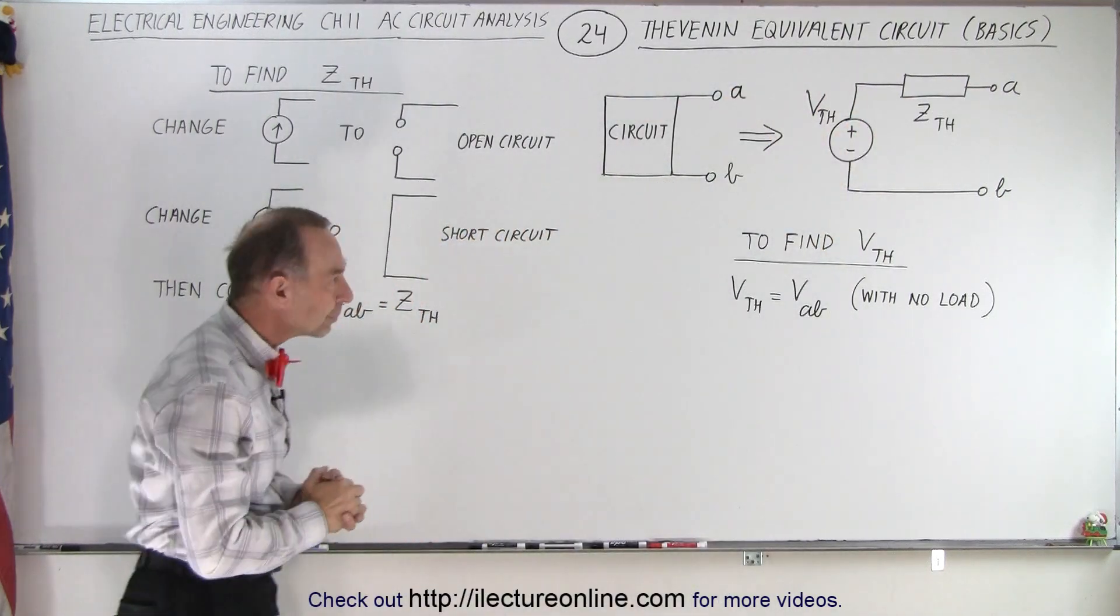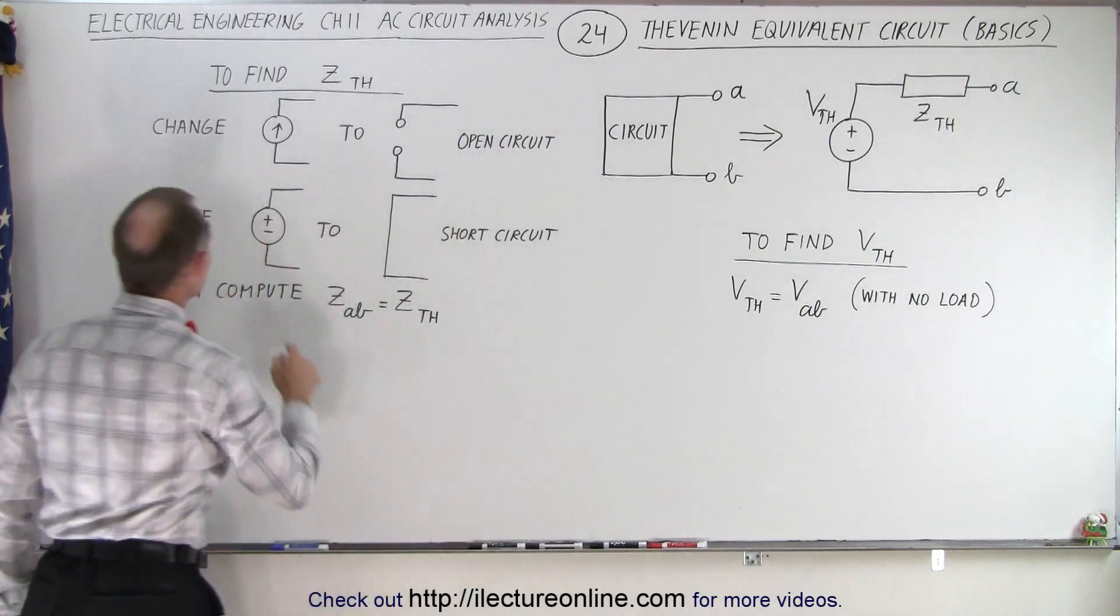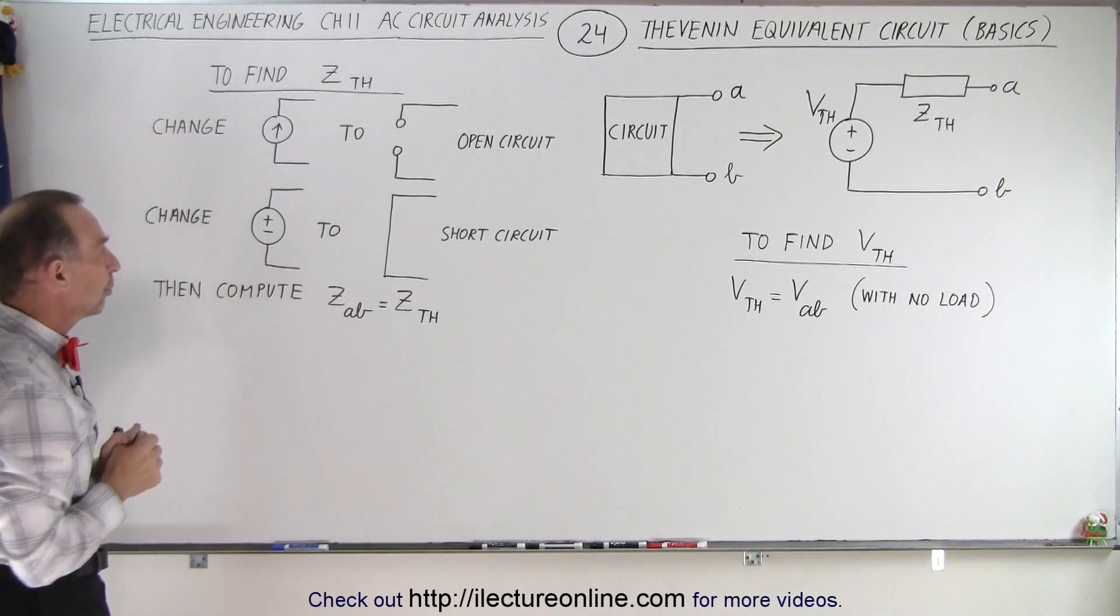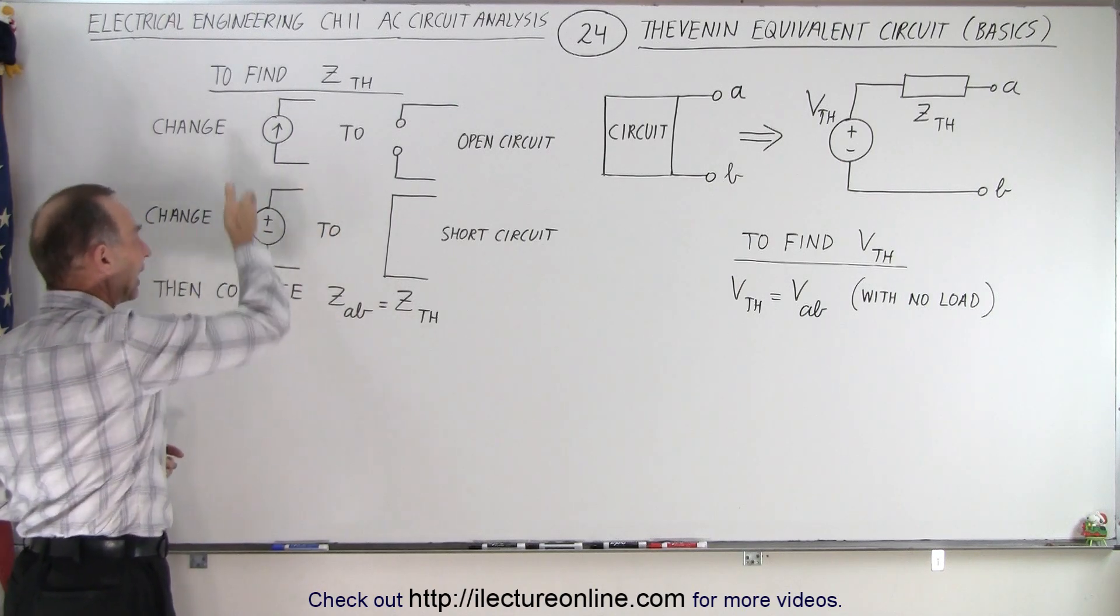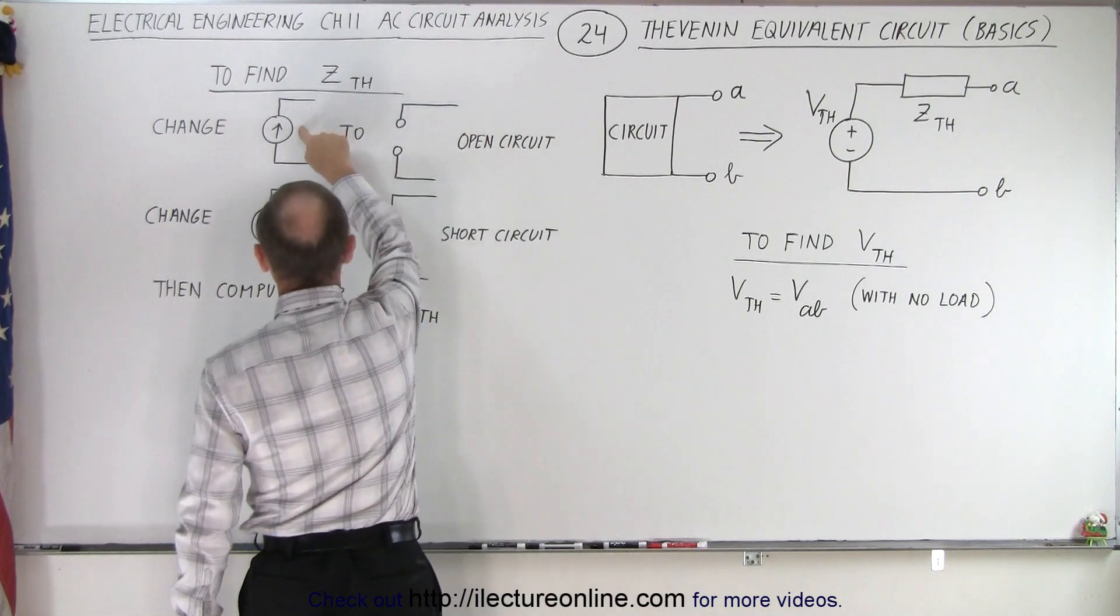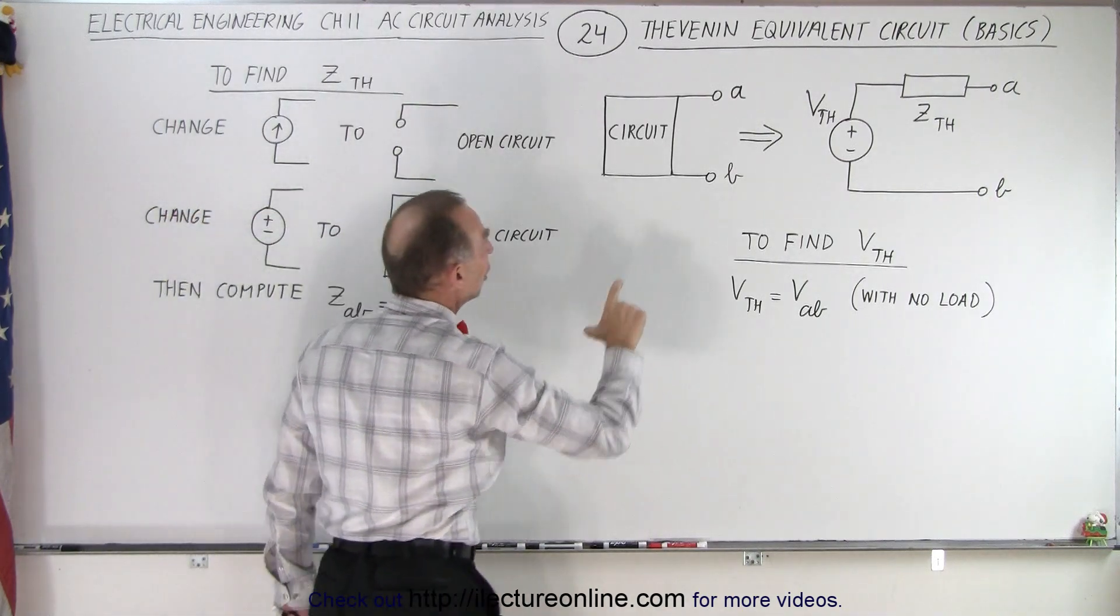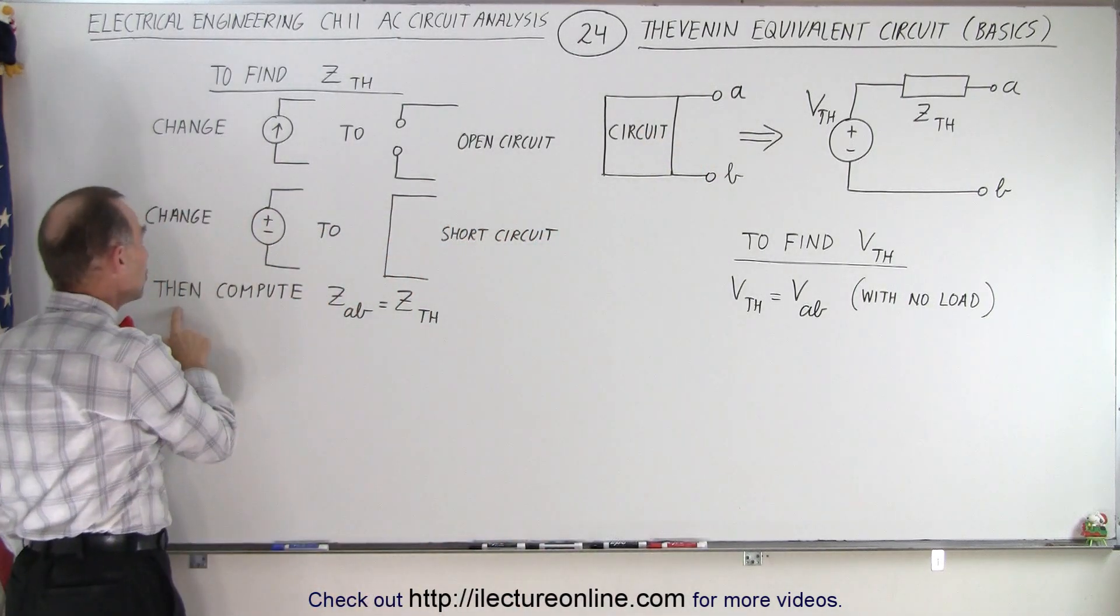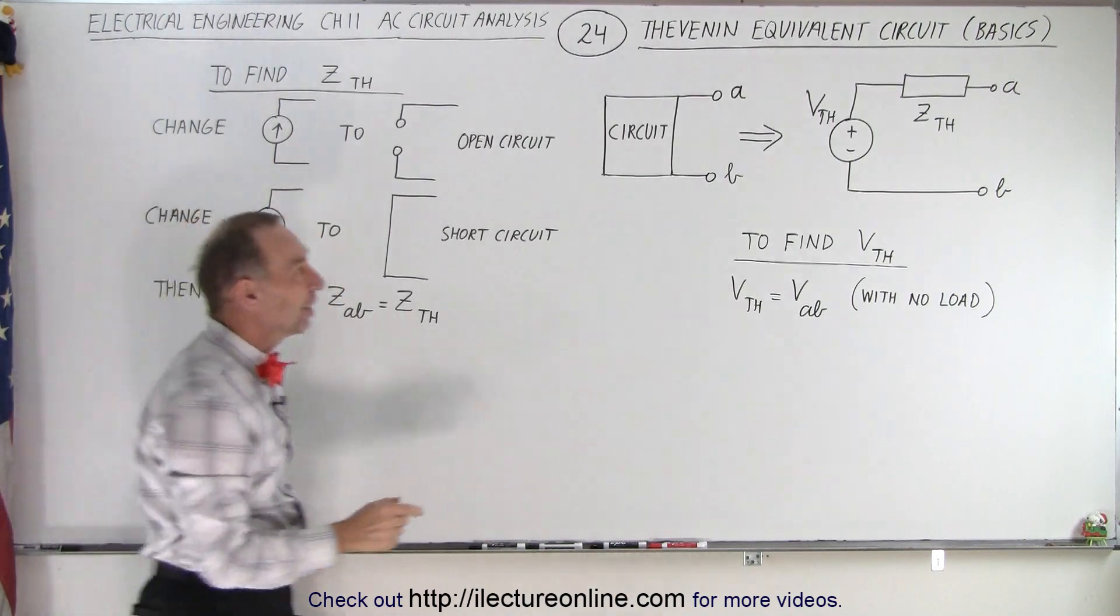So how do we do that? Well the first thing you want to do is to find the Thevenin impedance. To do that you take every current source and change it to an open circuit. So you simply remove the current source and leave the circuit as an open circuit. You also then take every voltage source and convert that to a short circuit. Simply remove it and connect the two ends so that you make it into a short circuit. Once you've done that, you've removed all your sources, then you calculate the impedance from A to B through the remaining part of that circuit. So once you do that, you compute the impedance between A and B which then becomes the Thevenin impedance.